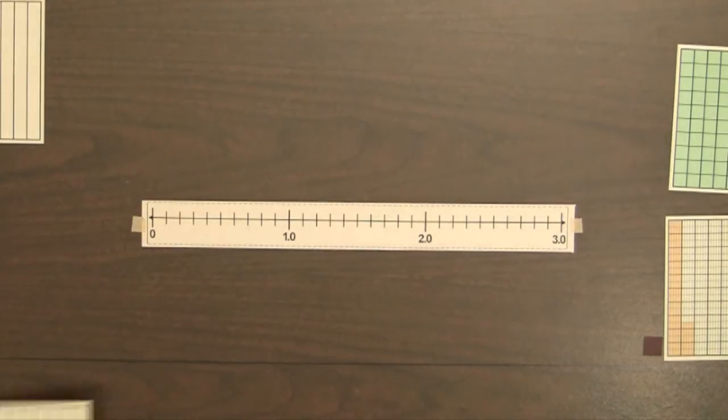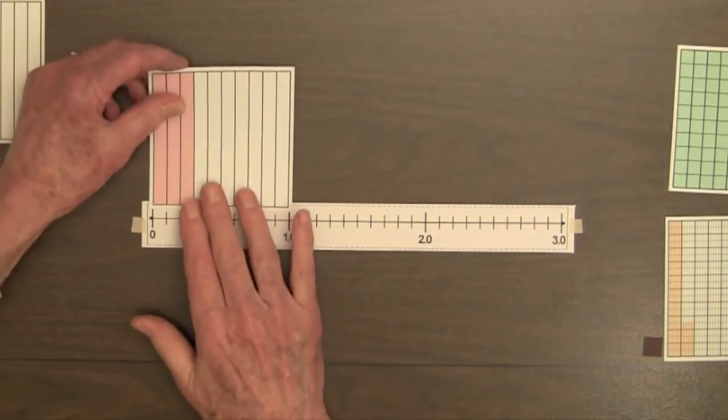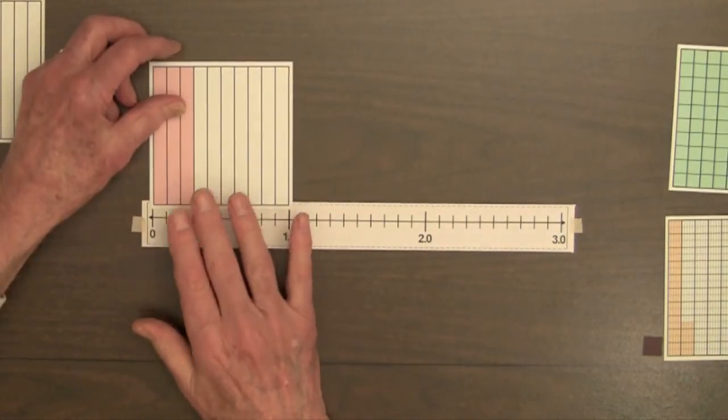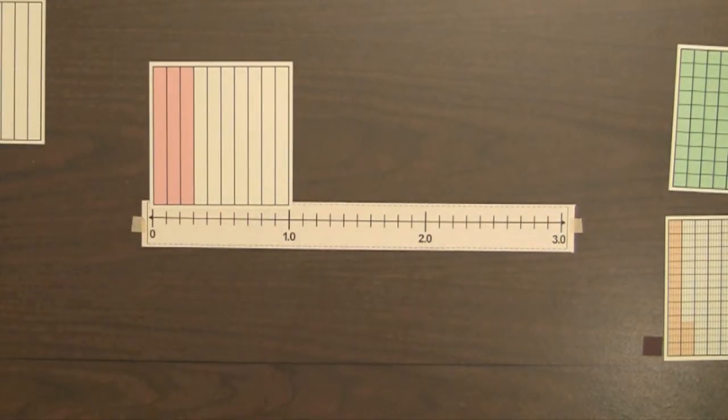Let's place the decimal square for 0.3 above the number line so that the shading begins above the zero point. Students know the decimal for this square is 0.3, and this helps to show where 0.3 is written on the number line.